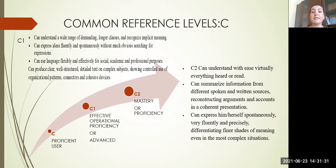The C2 level, which is considered to be proficiency level, mastery level, learners can understand with ease virtually everything heard or read. Can summarize information from different spoken and written sources, reconstructing arguments and accounts in a coherent presentation. Can express himself or herself spontaneously, very fluently, and precisely, differentiating finer shades of meaning even in most complex situations.